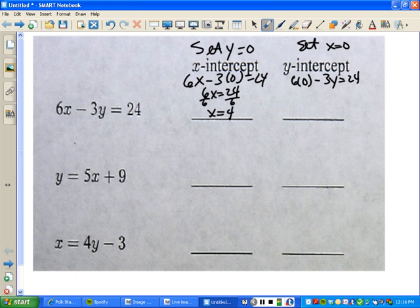So now, negative 3y equals 24, divide by negative 3, divide by negative 3, and you'll get y equals negative 8.